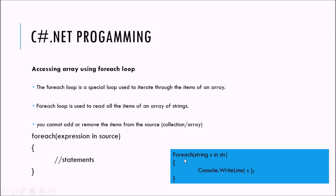Consider an example where we have a for-each loop iterating over a string array named str. We write: foreach (string s in str). The data type of the expression must be the same as the data type of a single element in the array — since str is a string array, the type must be string. If you are using an integer array, the data type must be integer. Then we write console.WriteLine(s) to print each element.